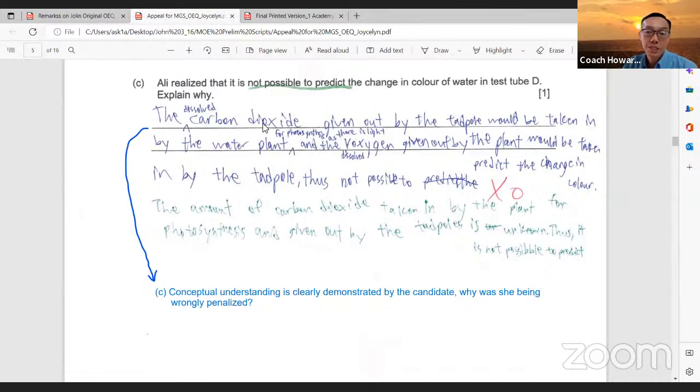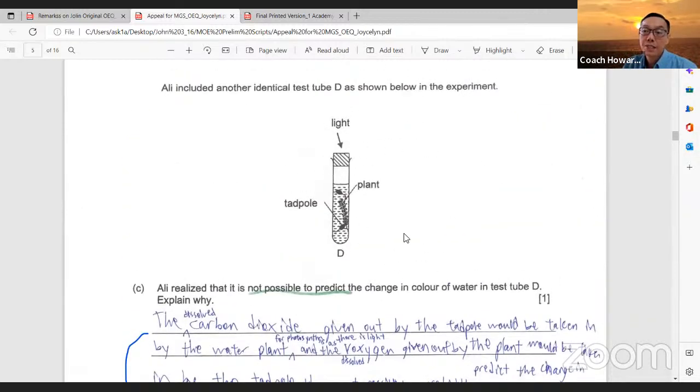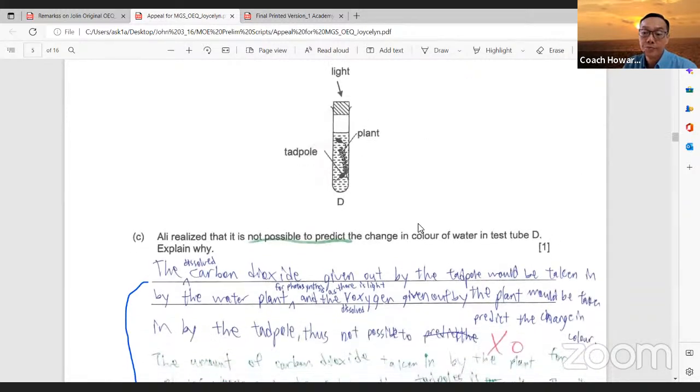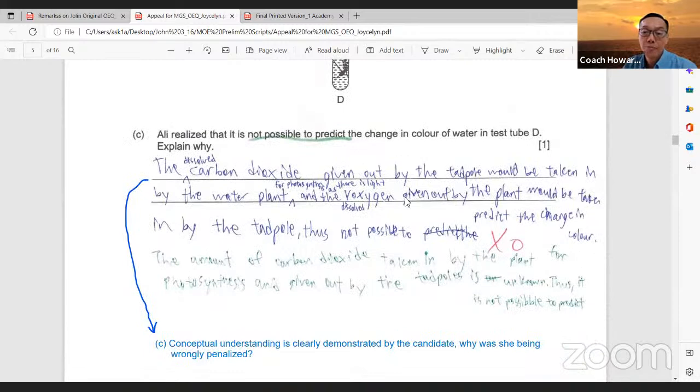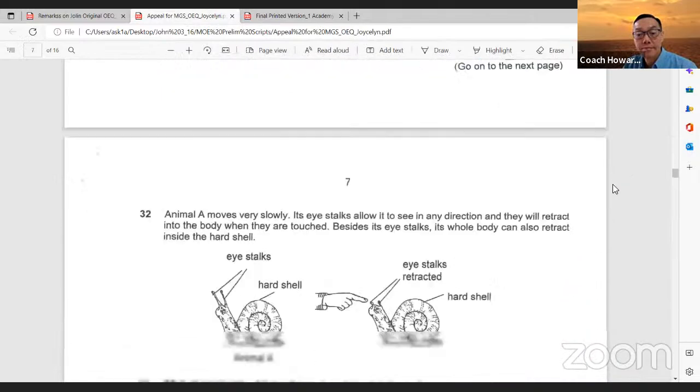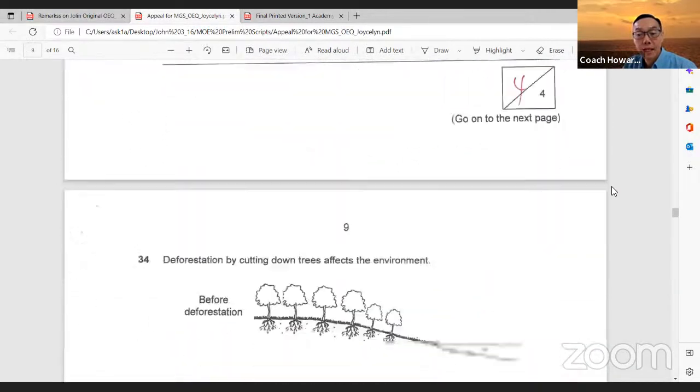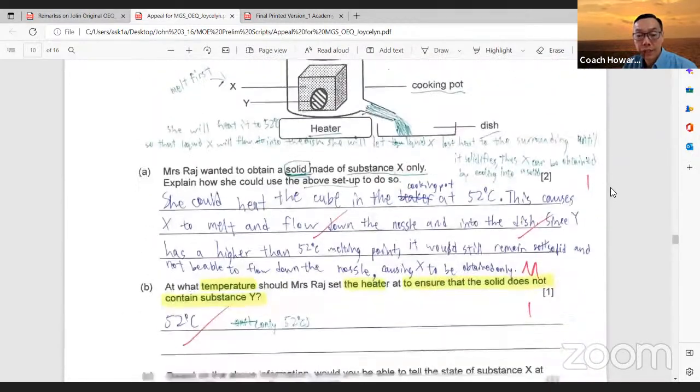She wrote, the dissolved carbon dioxide given out by the tadpole would be taken in by the water plant for photosynthesis as there is light. And the dissolved oxygen given out by the plant would be taken in by the tadpole. Thus, not possible to predict the change in the color. In other words, we cannot measure the amount of carbon dioxide and oxygen relative volume. I think that there is sufficient grounds for her to be awarded one mark.